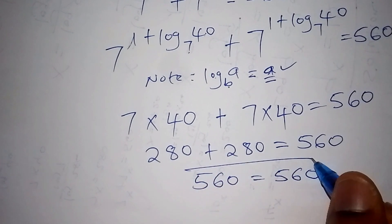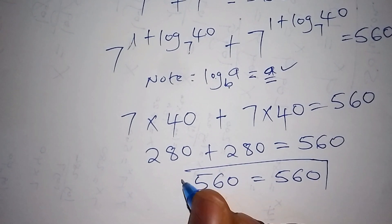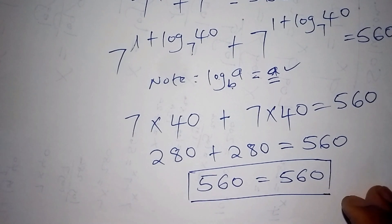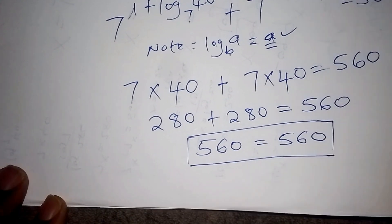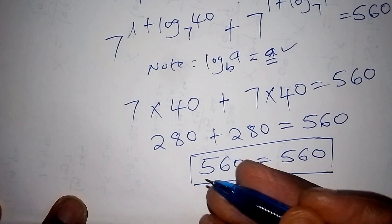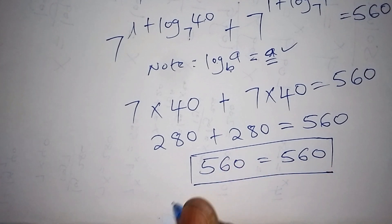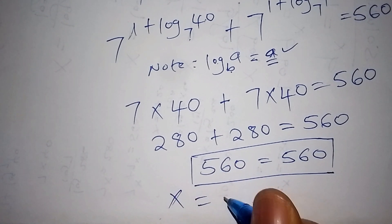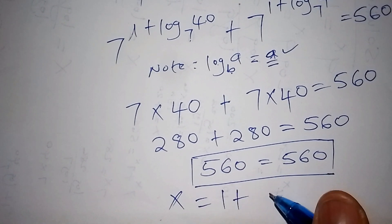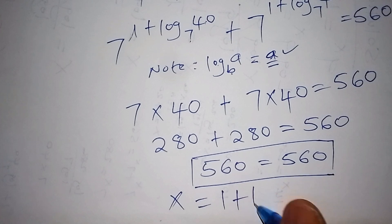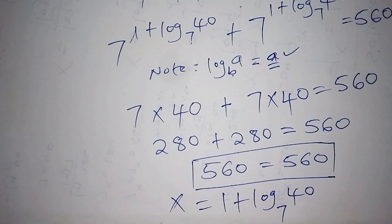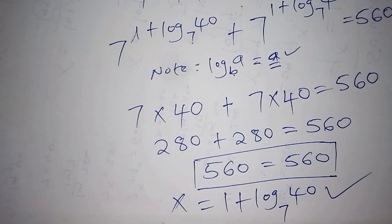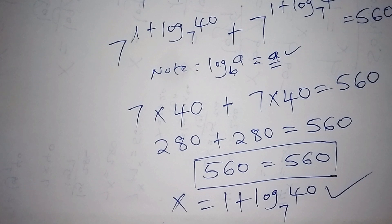Our answer is correct when we say that x is equals to 1 plus the log of 40 to base 7. That gives us the correct answer. If you've got that as the correct answer, thumbs up.